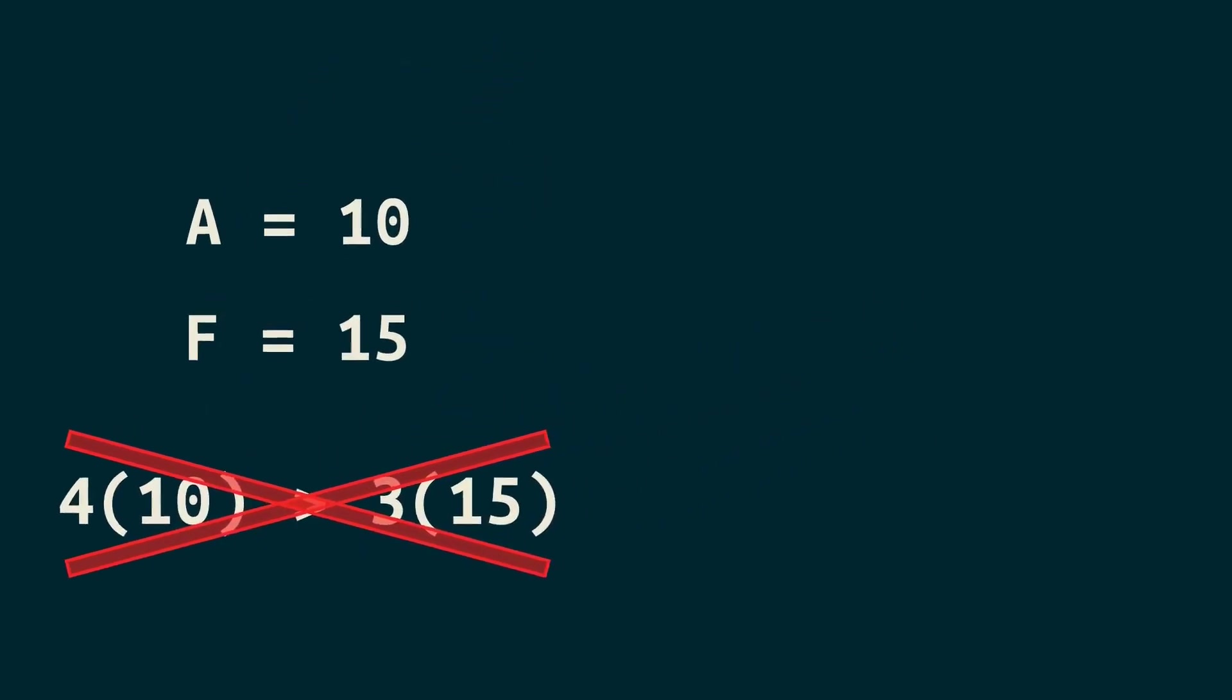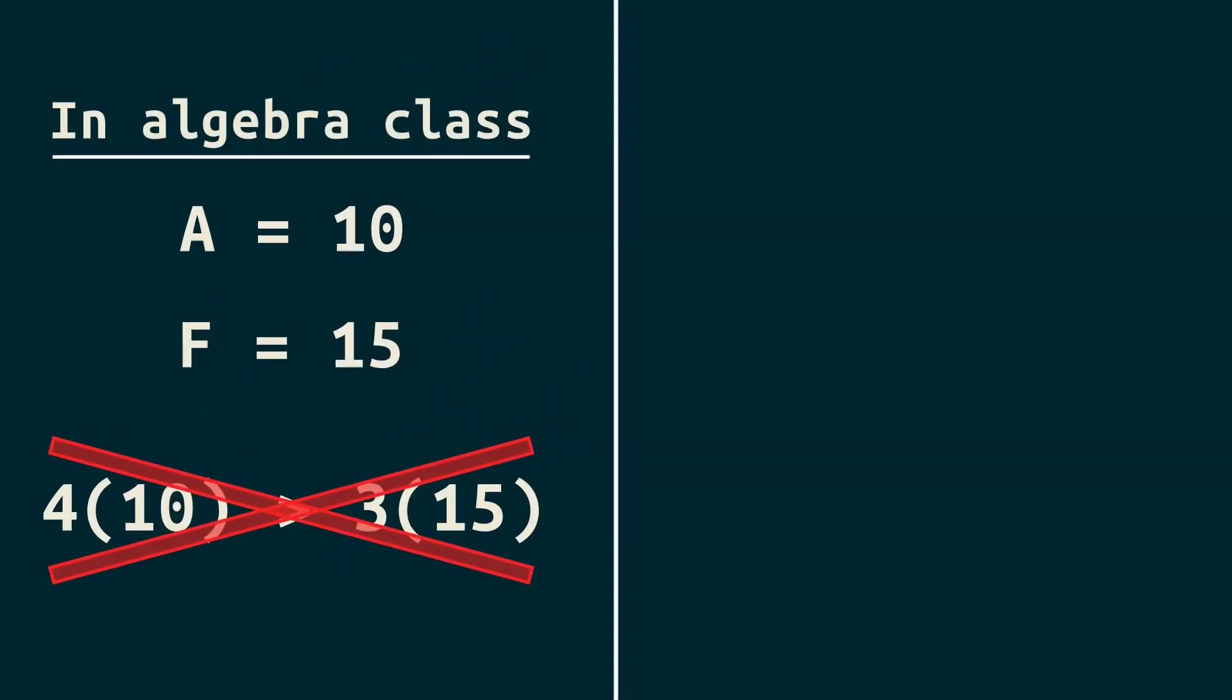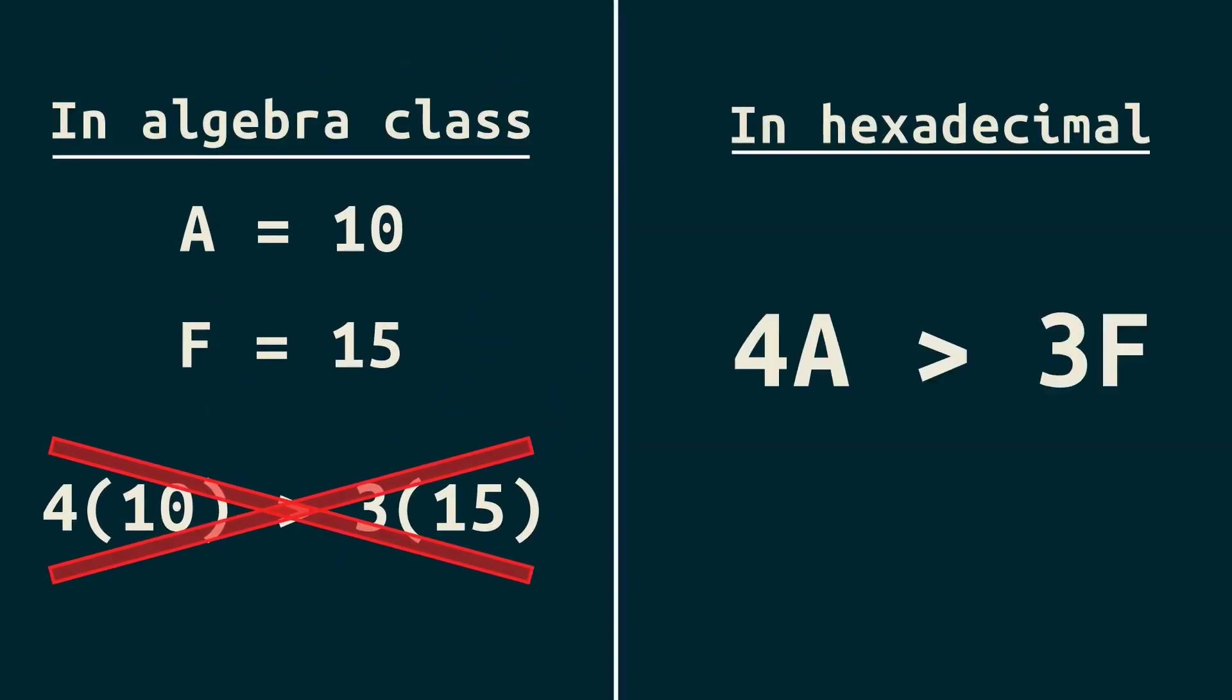And that's all true, if you're in algebra class. But this is hexadecimal, also called base 16. What's going on with 4A isn't multiplication of a variable at all. It's something more like this.